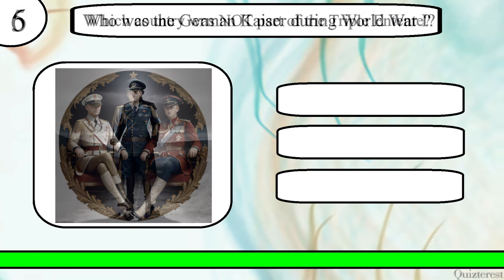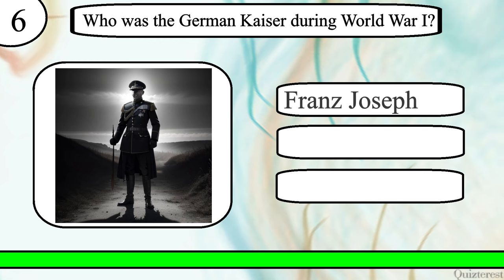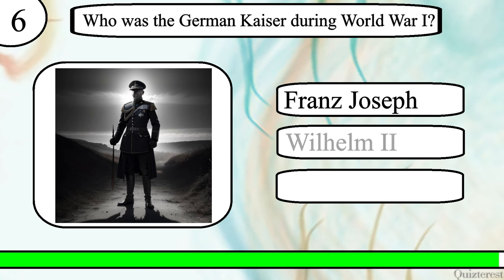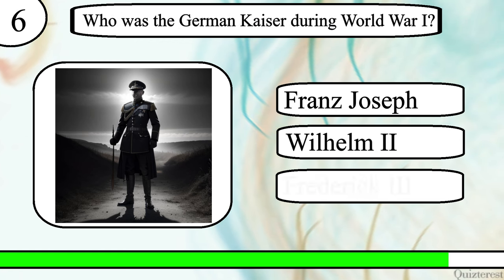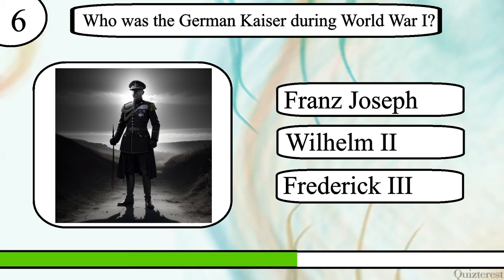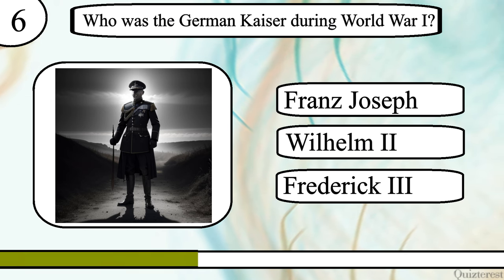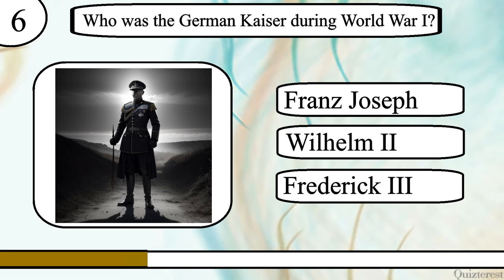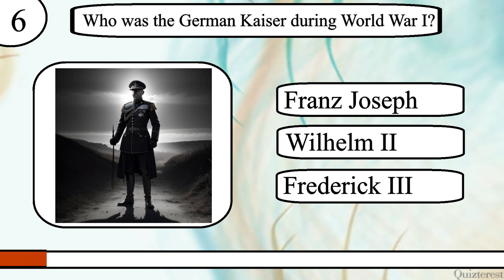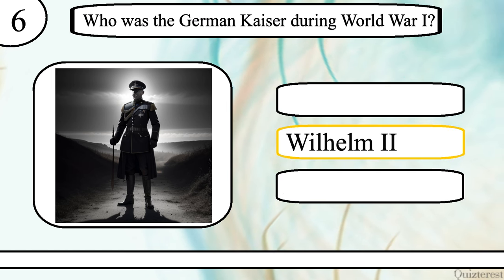Question 6. Who was the German Kaiser during World War I? Franz Joseph, Wilhelm II or Frederick III? The correct answer is Kaiser Wilhelm II.